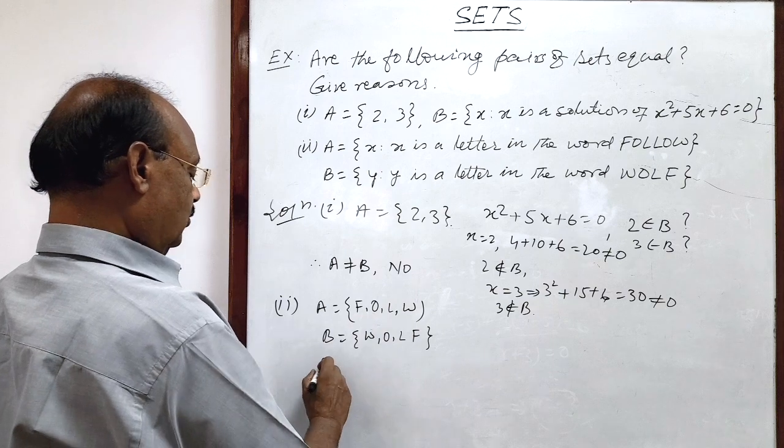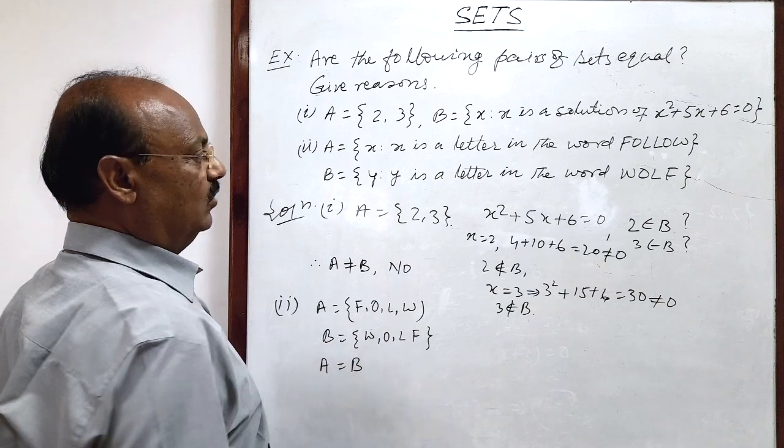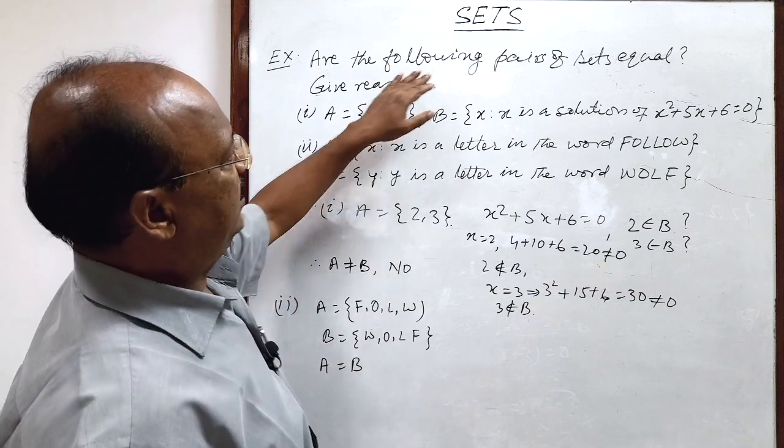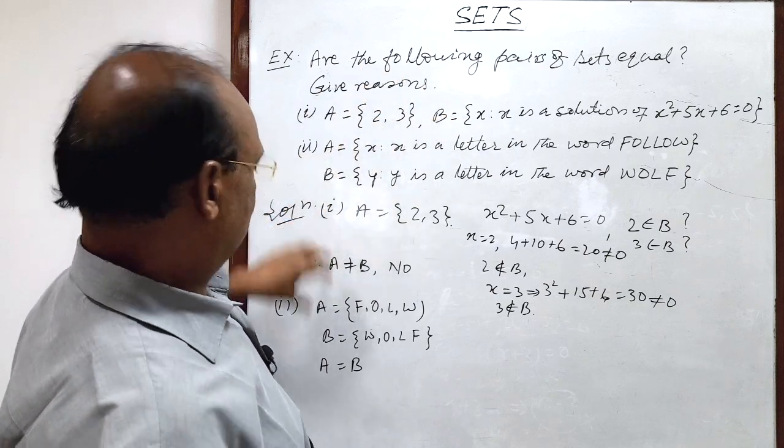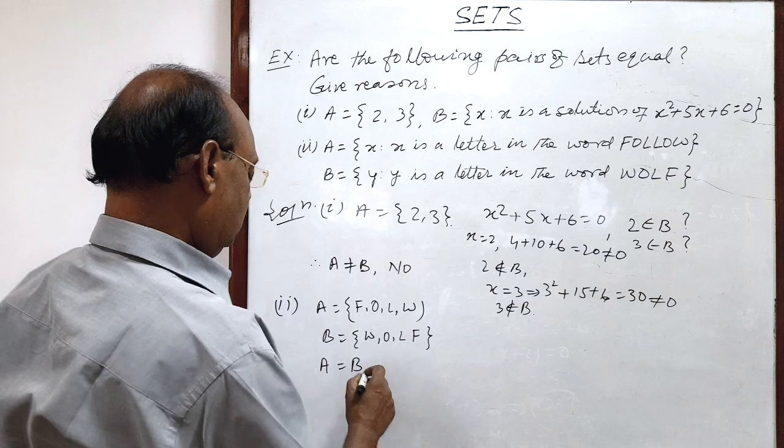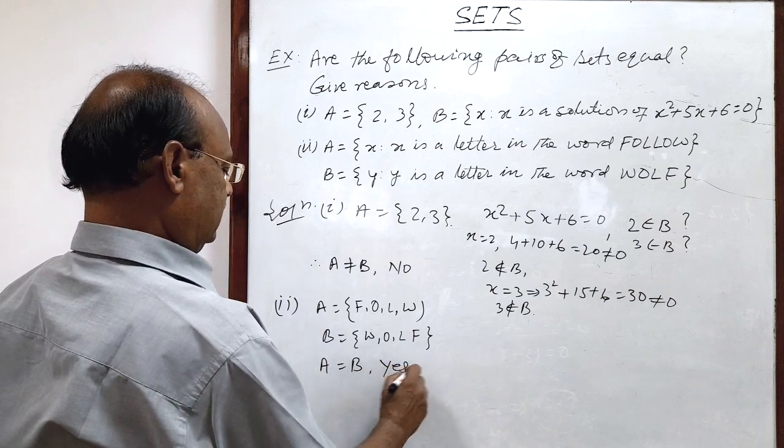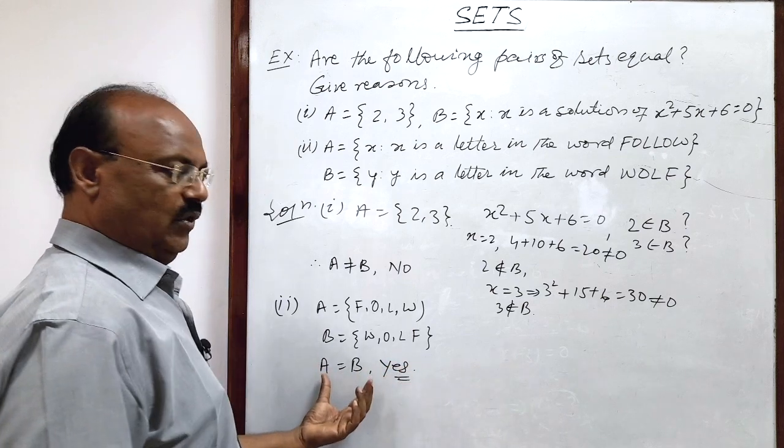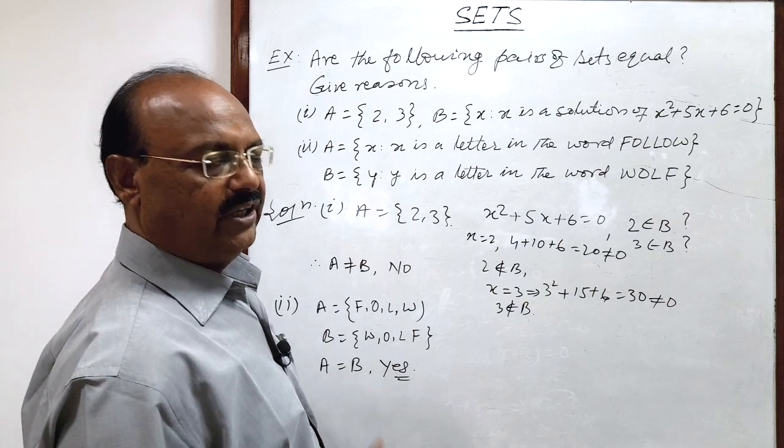What does it show? It shows that A and B are equal sets. We need to decide whether these two sets are pairs of equal sets or not. So our answer will be yes, A and B are pairs of equal sets.